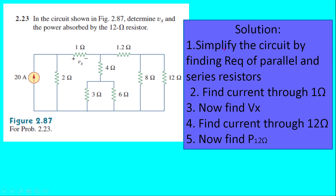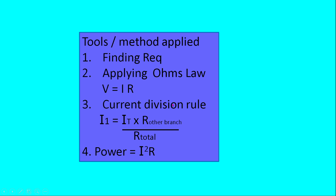In order to solve this problem we have to simplify this circuit, because it consists of so many resistances. We have to find the parallel and series combinations of these resistors in order to simplify them. Then we find the current flowing through the 1 ohm resistance to calculate Vx, and the current through the 12 ohm resistance to calculate the power.